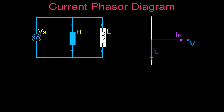To find the total current, we add the current through the inductor and the current through the resistor vectorially, head to tail. The sum of those two vectors is the hypotenuse of a right triangle, and that hypotenuse equals the total current. The phase angle is the angle by which the voltage leads the current, or equivalently the current lags the voltage.